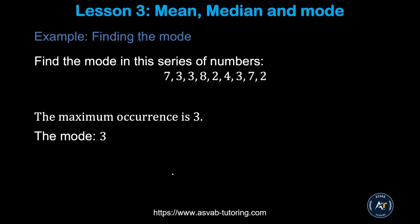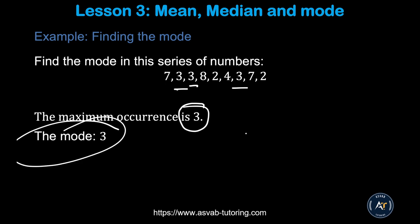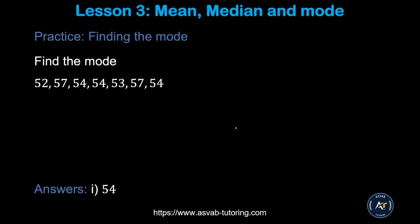The next thing is finding the Mode. What is mode? Mode means the number that occurs the most. You look at which number comes up most often. Here it seems like 3 came the most, so 3 is the mode. Make sure that you know the concept — sometimes they ask this type of question in the officer candidate test. Try the practice problem and make sure the answer is 54.